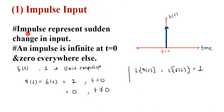The impulse signal represents a sudden change in input. Impulse is infinite at t equal to 0 and 0 everywhere else — it is denoted by delta of t. Here you can see that at t equal to 0 it is infinite. If its magnitude is 1, then it is called a unit impulse, and unit impulse is given by r(t) equal to delta(t), which is 1 when t equal to 0 and 0 when t is not equal to 0.